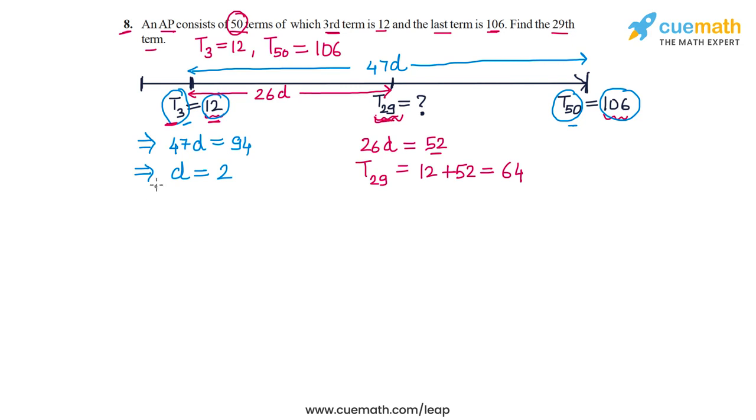Now let me show you a more algebraic way of doing the exact same thing. We are going to assume that the first term of the AP is A and the common difference is D. Now we are told that T3 the third term is 12 and T50 the 50th term is equal to 106. So T3 I can write in terms of A and D as A plus 2D, which is 12, and T50 I can write as A plus 49D, so A plus 49D is equal to 106.